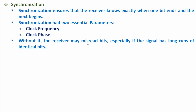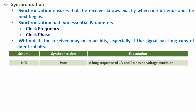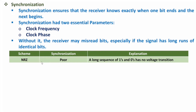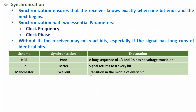Comparing synchronization across schemes: NRZ has poor synchronization because it transmits plus V for logic 1 and zero voltage for logic 0 — a long sequence of ones or zeros produces no voltage transition, making it difficult to identify the clock. RZ (return-to-zero) has better synchronization because the signal returns to zero every bit. Manchester has excellent synchronization because there is always a transition in the middle of every bit.